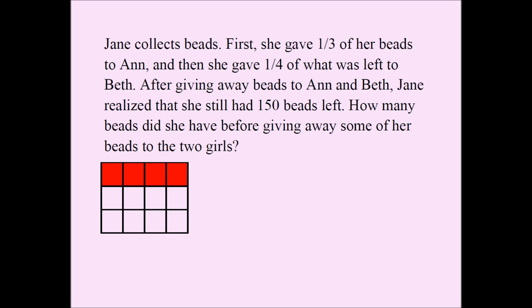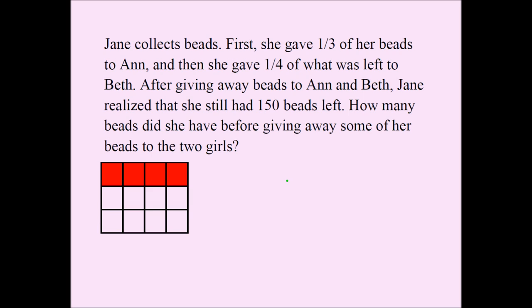She gave away the red part to Anne, and this is what she is left with. You have to read the question very carefully — she gave one-fourth of what was left. So whatever this remaining portion was, one-fourth of it went to Beth. Jane did not give one-fourth of her original amount to Beth; she only gave one-fourth of what was left. So one-fourth of the remaining piece is this blue portion.